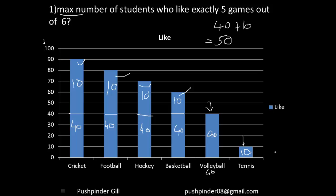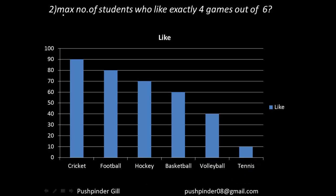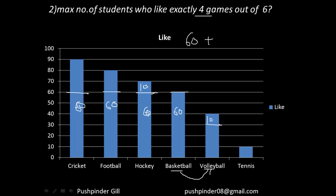Let's use the same approach for the next question: find the maximum number of students who like exactly 4 out of 6 games. Whenever you have to find exactly 4, you start from the fourth sport from the top — that is basketball, which has 60 people. The same group of 60 people like hockey, football, and cricket. So I have made a group of 60 people. Now, hockey only has 10 people left, so I can make another group: those 10 people like volleyball, hockey, football, and cricket.